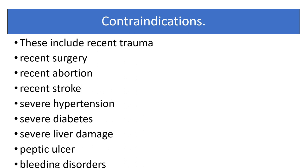Fibrinolytics are contraindicated in recent trauma, recent surgery, recent abortion, recent stroke, severe hypertension, severe diabetes, severe liver damage, peptic ulcer, and bleeding disorders. In all these conditions, fibrinolytics are contraindicated.